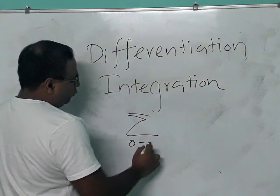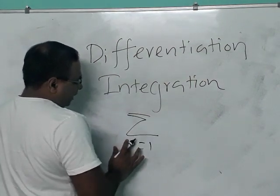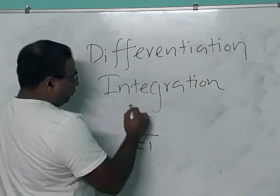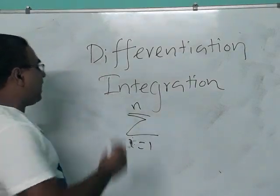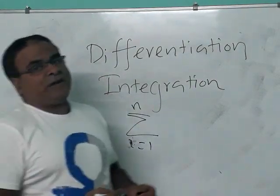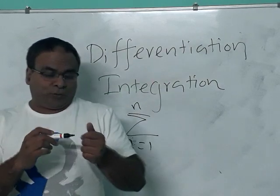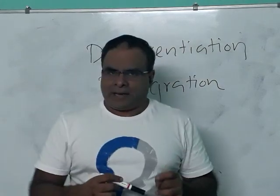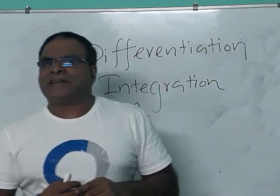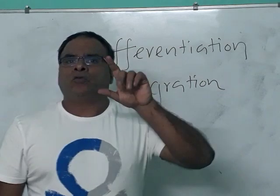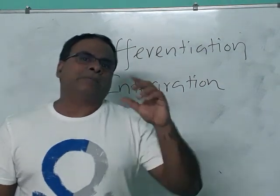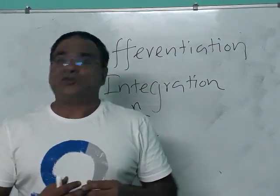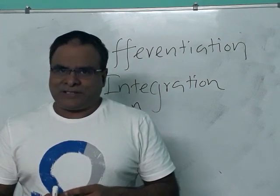In mathematics, you learn summation — i equals 1 to n — that means we are adding all the values between 1 and n. When you are doing summation, you won't consider the numbers between 1 and 2.